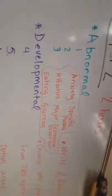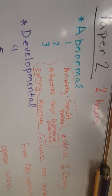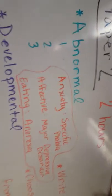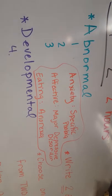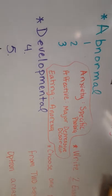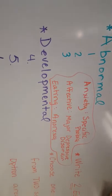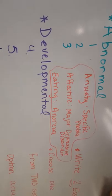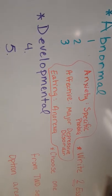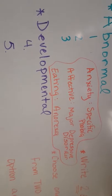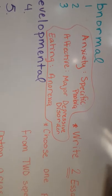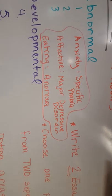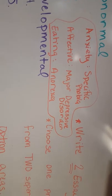In this video we will be concentrating on abnormal psychology. There are three specific sections that abnormal psychology splits into: anxiety, affective disorders, or eating disorders. The specific disorders within those are either specific phobia, major depressive disorder, and anorexia.